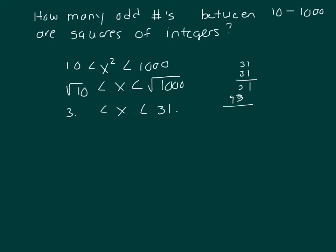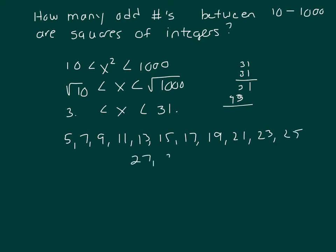So how many odd integers are between there? 3 is not included, so the next one would be 5, 7, 9, 11, 13, 15, 17, 19, 21, 23, 25, 27, 29.